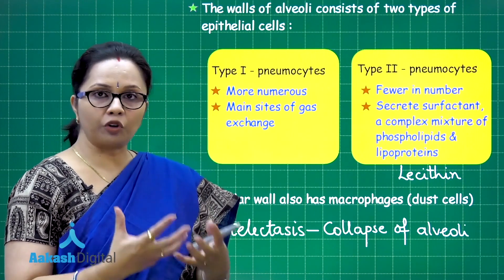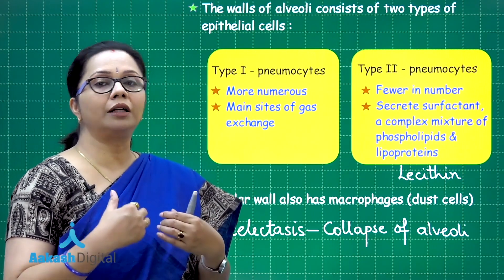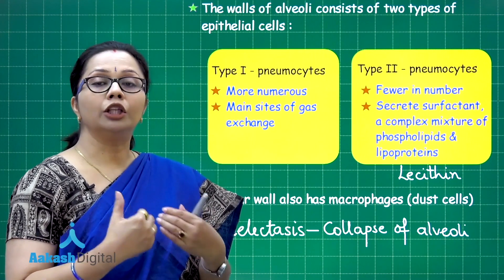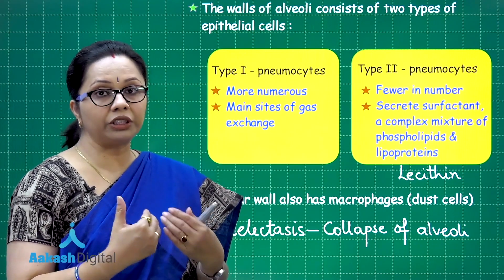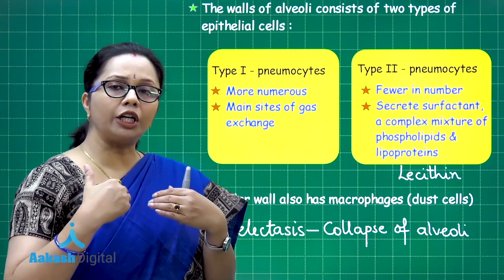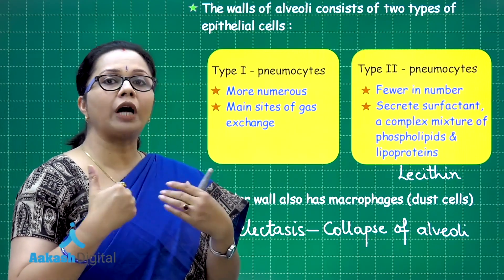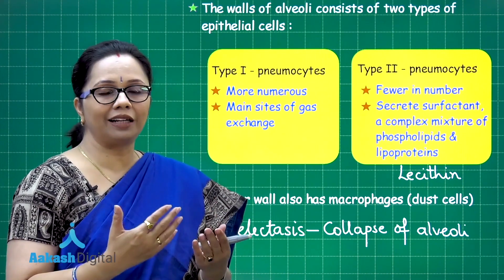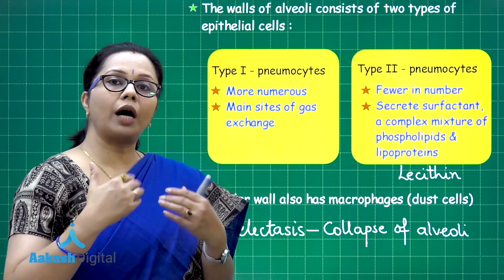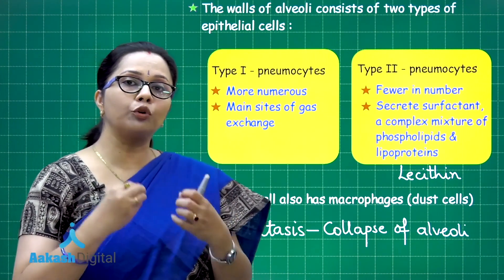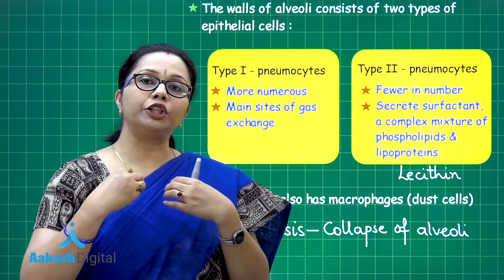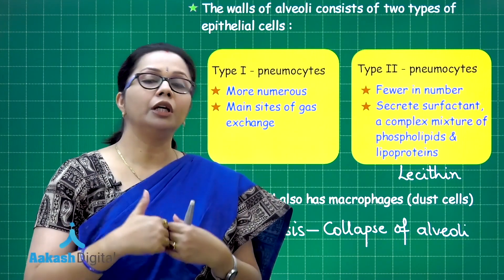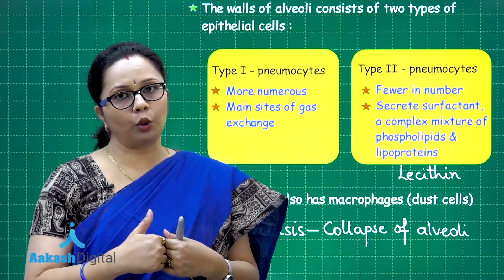The cilia lining the trachea — the pseudostratified ciliated epithelium — continuously move outward, forming a mucus escalator. Those particles along with mucus are pushed outward into the pharynx, where we keep swallowing them.